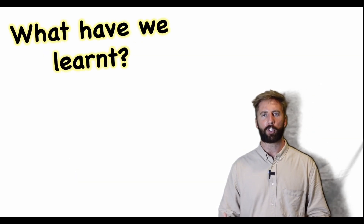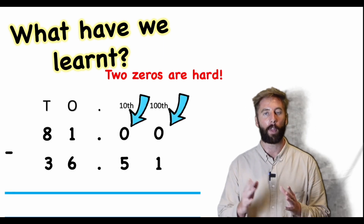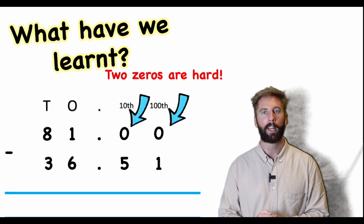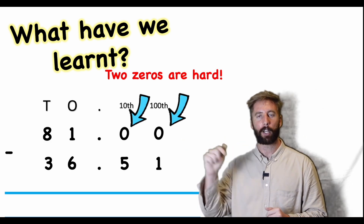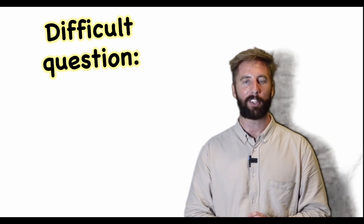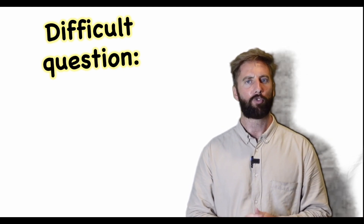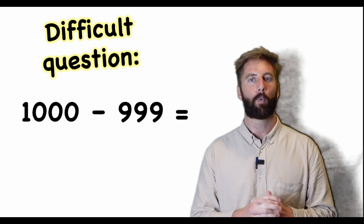What have we learned from this question? If we have two zeros next to each other on the top row, it can be really tricky because we have to keep looking until we find something next door to borrow from, and then we have to do it in many stages. That makes questions like this really difficult.